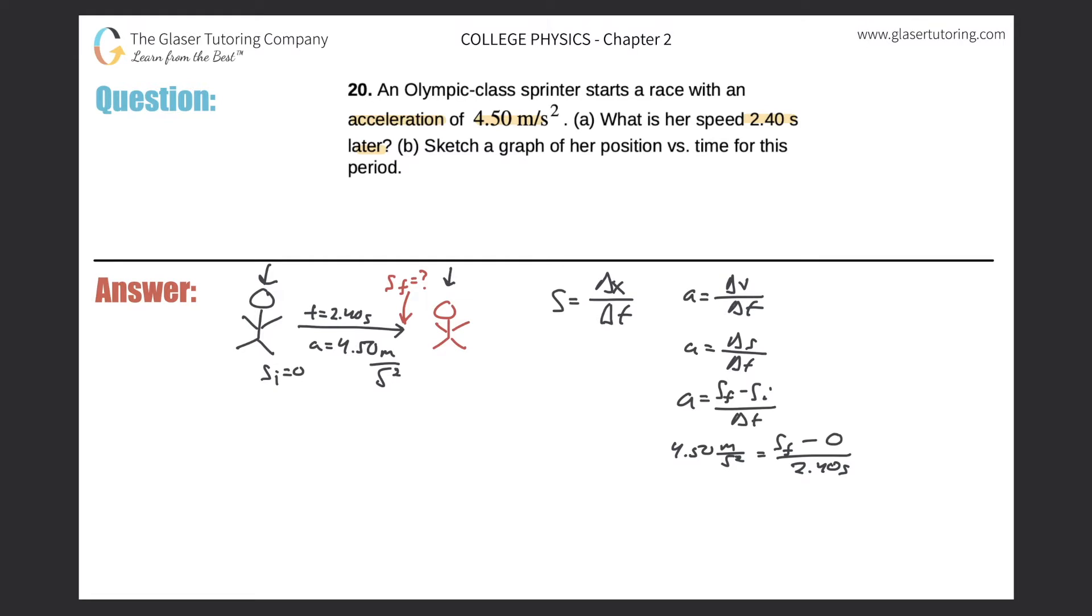From here I can now do my calculations. I have consistency within the time units, so that's good. When I do find the speed value, it will be in meters per second. Let's just now get rid of all those units to clean things up a little bit. So 4.50 will equal the final speed divided by 2.40.